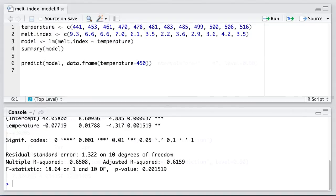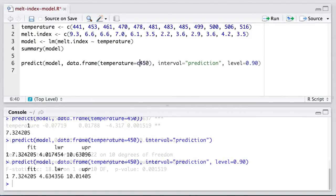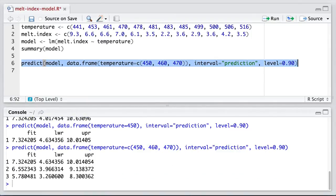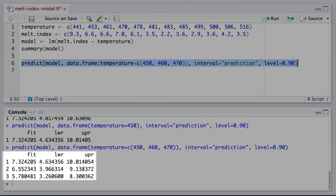We can expand that data frame with two or more entries, for example, as shown here on the screen, using the C command or the combination command. That will create multiple rows and therefore give you multiple predictions with their corresponding prediction intervals.